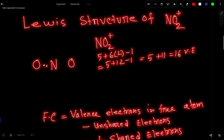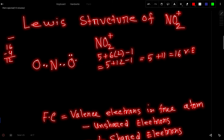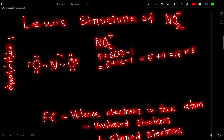To connect the atoms, we use two dots or one single bond. We use bonds to connect, using four electrons. Out of 16 we have used four, so we have 12 valence electrons left. These 12 electrons will be used to satisfy the octet of the outer atoms first. This oxygen already has two, so it can take six more to fulfill its octet. Similarly, the other oxygen takes six, and we have now used all the valence electrons.